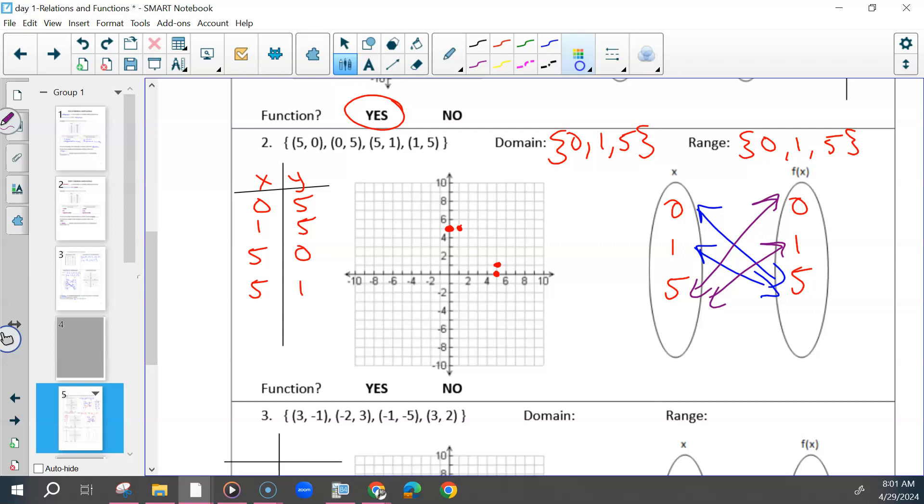Once you've finished your table, graph, and mapping, look at your x values. Are there any x values that have more than one y value? Yes. You can see that in the tables, or on the graph, or in the mapping. Wherever you're looking, somewhere that should tell you this x value has more than one, so this is not a function. Do you have any questions on how to determine if it is a function or not?